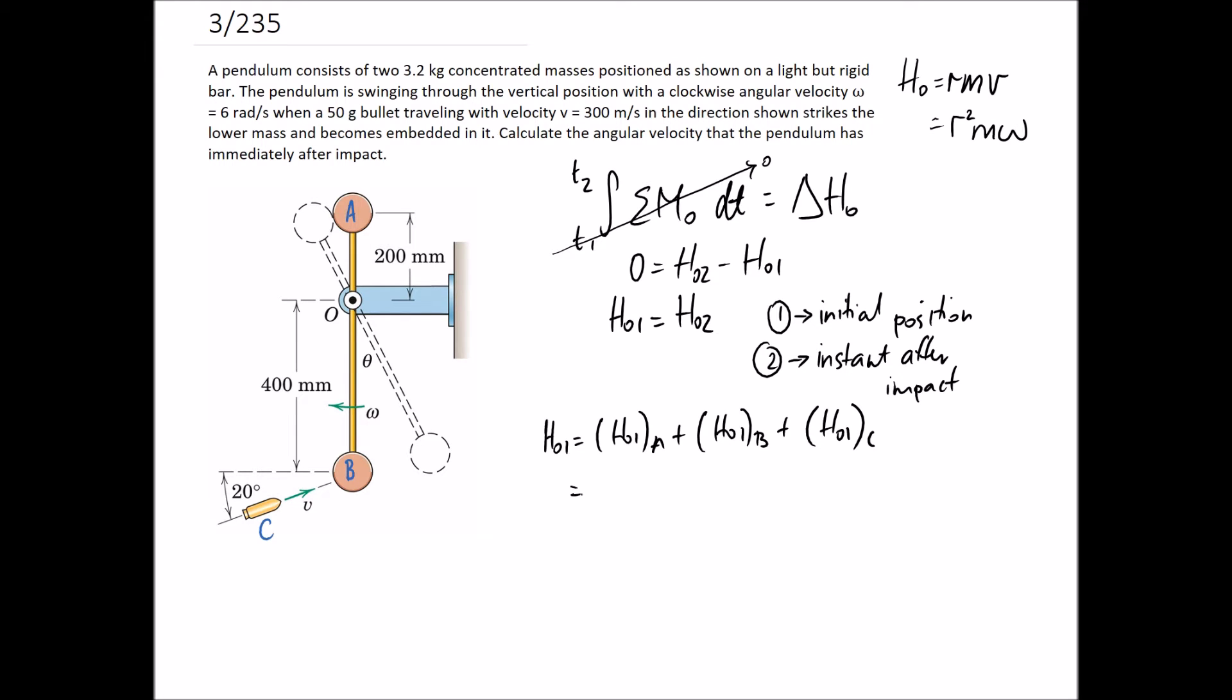Starting off with A, we know that at the initial position, this whole thing is rotating at an angular velocity, which we're given as six radians per second. We're going to use R²·M·ω simply because we've been given omega, which means it's a lot easier. Otherwise, we'd have to convert that into a linear velocity.